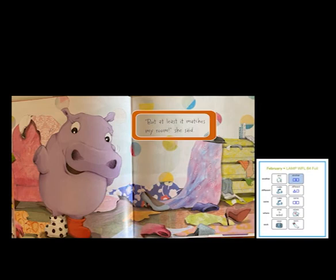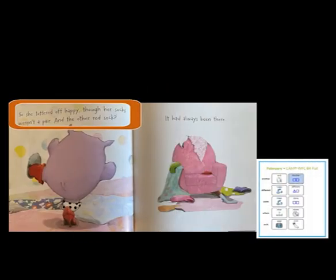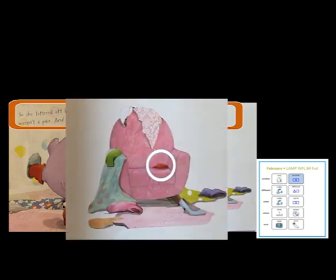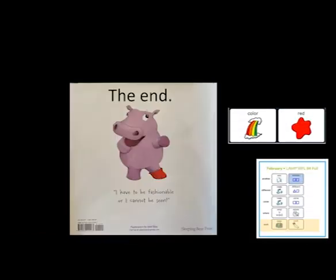But at least it matches my room, she said. I see why she said that — the sock has polka dots and her bedroom wall has polka dots. I wonder where that red sock is. So she tottered off happy, though her socks weren't a pair. And the other red sock? It had always been there. I see the red sock — it's on her chair. The end. She finally found her red sock on the chair. Her socks are not the same, but that's okay. She found another sock. What do you think you would do if you couldn't find two socks of the same color?